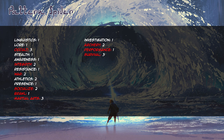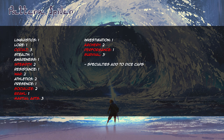Now we select three specialties in abilities we have at least one dot in. Dragon-Blooded also get additional specialties based on their background, but young Essence 1 characters don't — we'll come back to those when we upgrade the character later. When choosing my three specialties I want to reflect my three main themes: spirits, nature, and war. I add one specialty of 'gods' to socialize, one specialty of 'training beasts' to survival, and one specialty of 'forest tactics' to war.